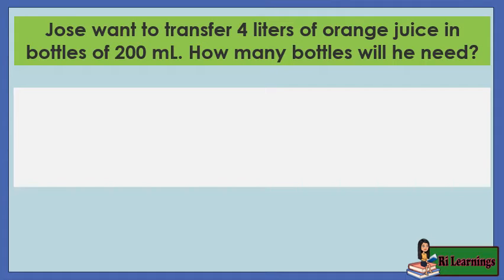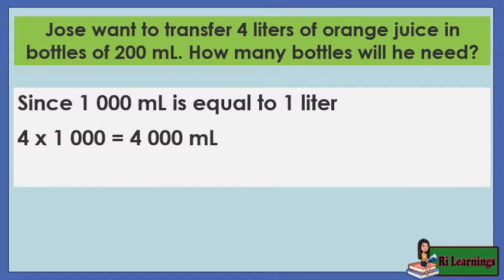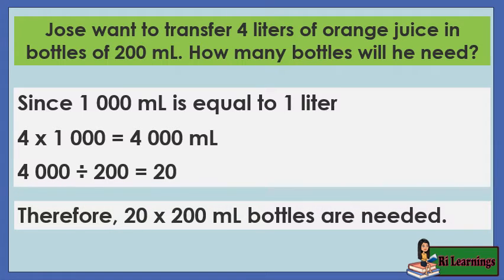Jose wants to transfer 4 liters of orange juice into 200-milliliter bottles. How many bottles will he need? Since 1,000 milliliters equals 1 liter, 4 liters times 1,000 equals 4,000 milliliters. To find the number of 200-milliliter bottles needed, divide 4,000 by 200. 4,000 divided by 200 equals 20. Therefore, 20 bottles of 200 milliliters are needed.